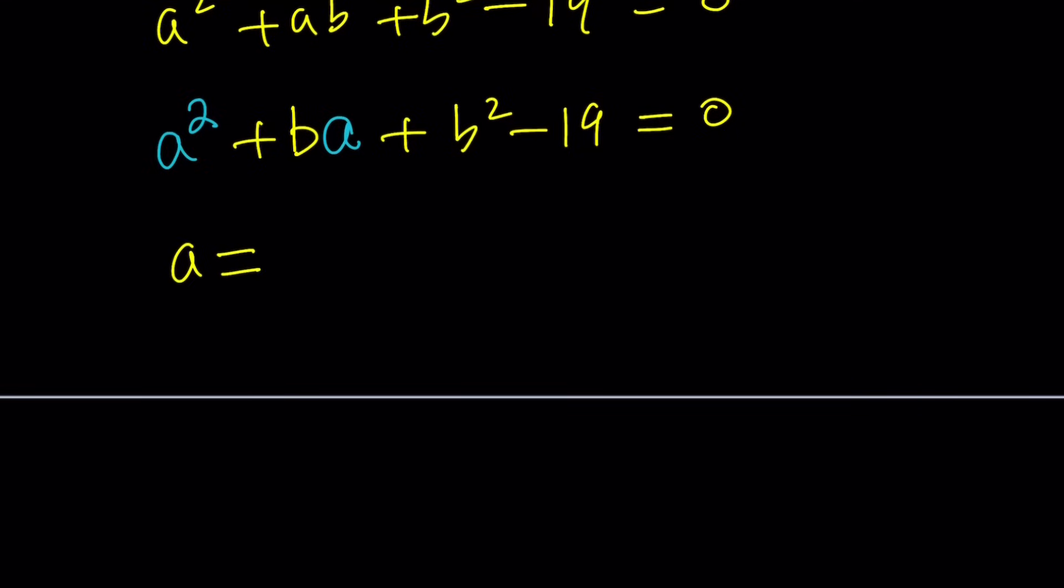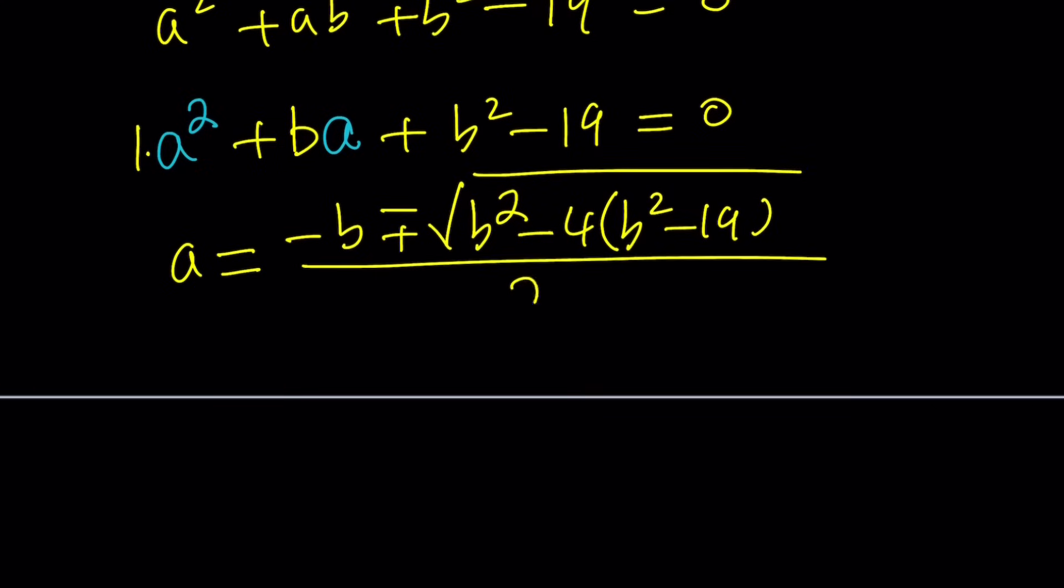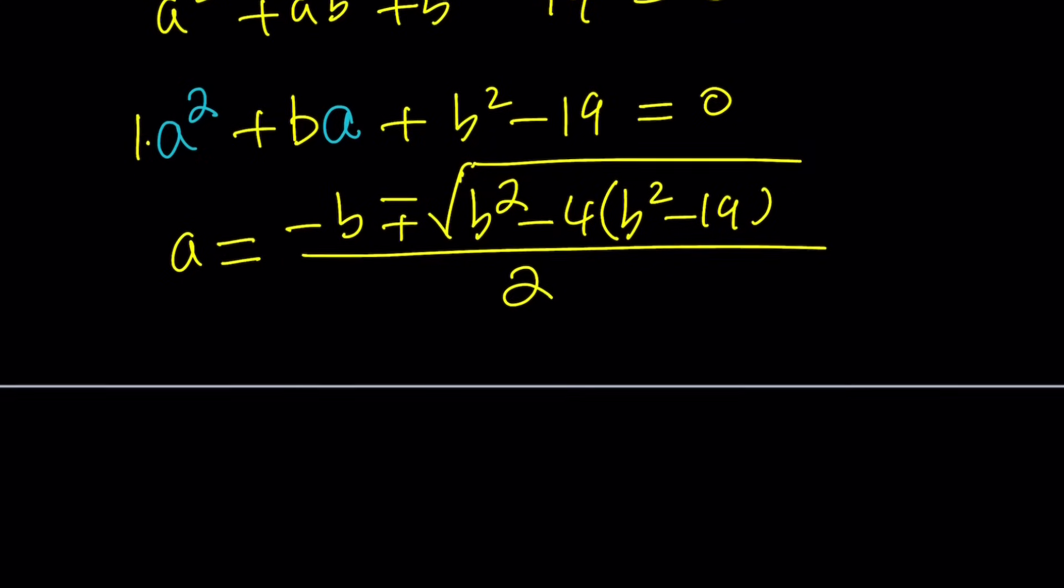So a is negative b, plus minus the square root of b squared, which is really b squared, minus 4ac. a is 1 in this case, because the coefficient of a squared. It's kind of weird, but 4 times ac, which is b squared minus 19. So this is the stuff that we need to multiply, I mean simplify and divide by 2. So let's go ahead and simplify it.